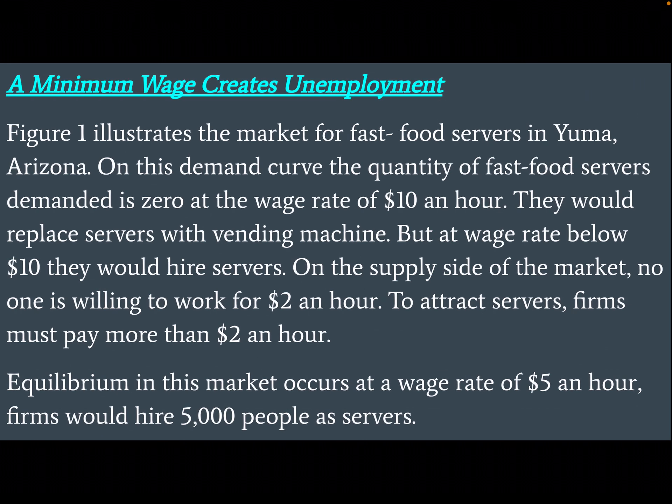A minimum wage creates unemployment. Figure 1 illustrates the market for fast food servers in Yuma, Arizona. On the demand curve, the quantity of fast food servers demanded is zero at the wage rate of $10 an hour — firms would replace servers with vending machines — but at wage rates below $10, they would hire servers. On the supply side, no one is willing to work for $2 an hour; to attract servers, firms must pay more than $2 an hour. Equilibrium in this market occurs at a wage rate of $5 an hour, where firms would hire 5,000 people as servers.